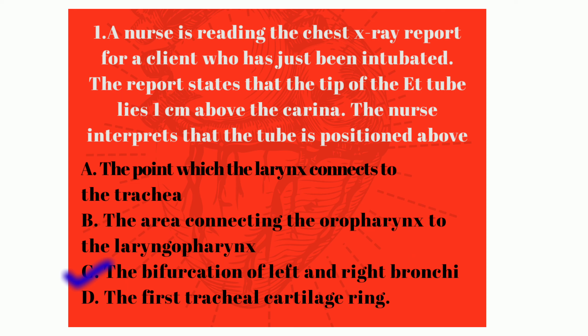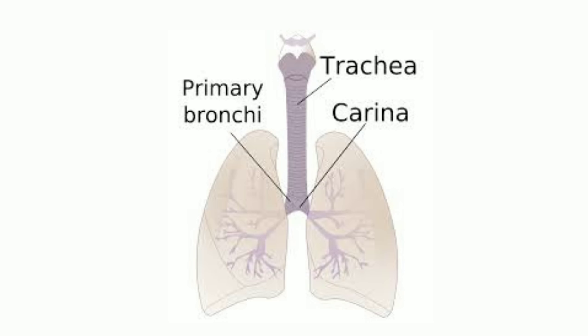The correct answer is option C: the bifurcation of left and right bronchi. The carina is a cartilaginous ridge that separates the opening of the two main bronchi — the right and left bronchi. If an endotracheal tube is inserted past the carina, the tube will enter the right main bronchus due to the natural curvature of the airway. So the tube is above the bifurcation of the left and right bronchi.